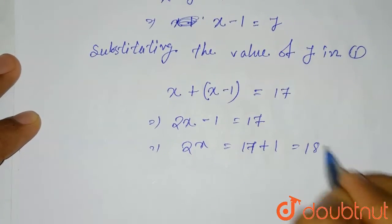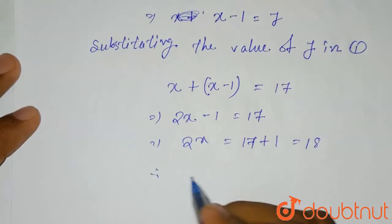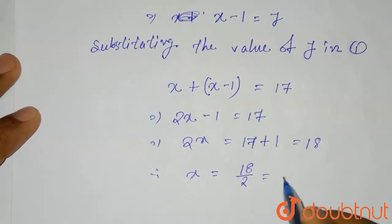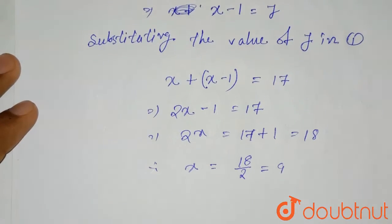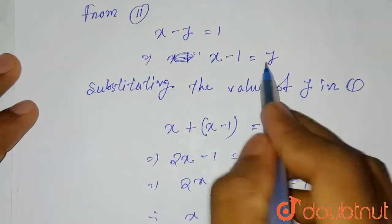Therefore x equals 18 divided by 2, which equals 9. So we found that the value of x is 9. Now from here we can find the value of y.